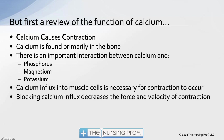There's an important interaction between calcium and phosphorus, magnesium, and potassium. Interestingly, all of our electrolytes are connected in one way or another, so when they start moving in different directions we often end up with more than one electrolyte abnormality — maybe you've seen this in practice.